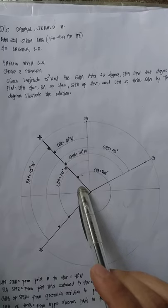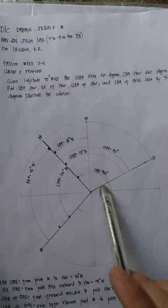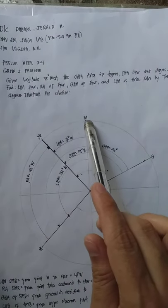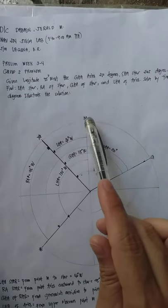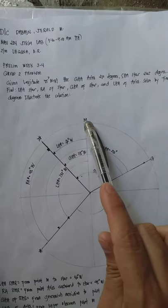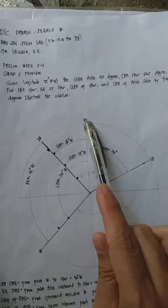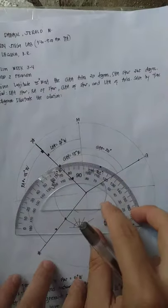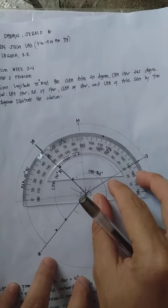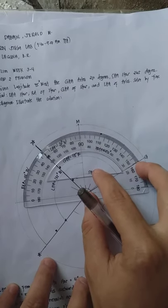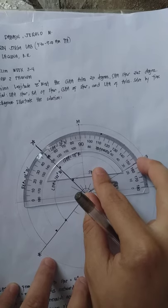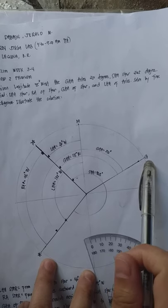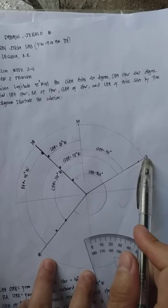First, I made a circle using my protractor, then I divided the circle into four parts. In the upper part I put point M, which is the observer's meridian. Then I measured 75° using my protractor, and I marked point G here — this is now my Greenwich meridian.